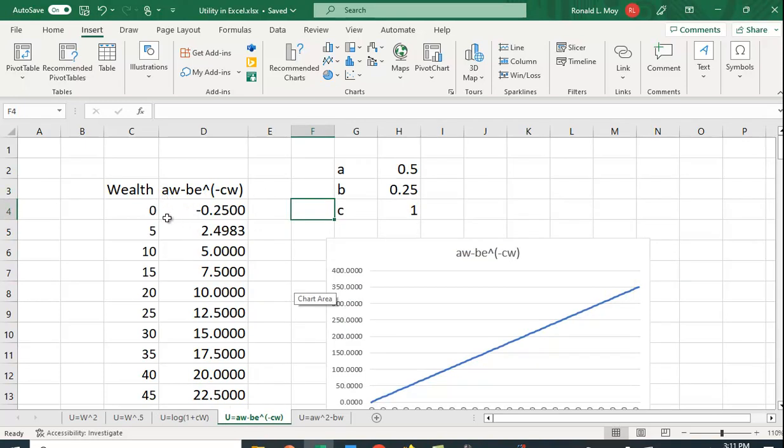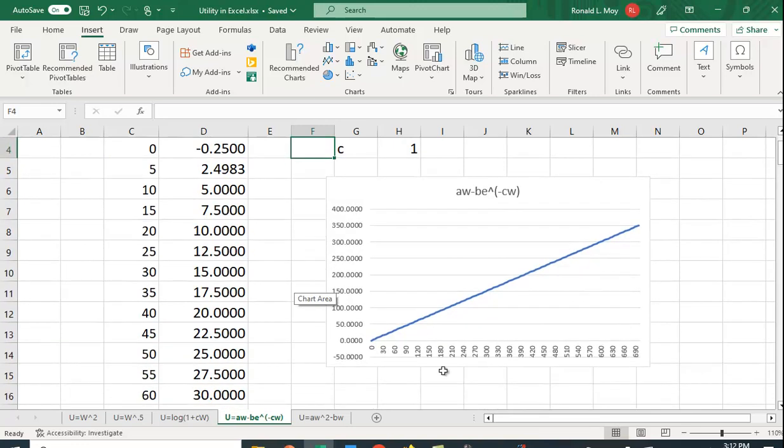Here, where wealth is a times wealth, a times W minus b raised e to the minus CW. And there are different values for these numbers. And this looks like a straight line looks to be somebody who's risk neutral.